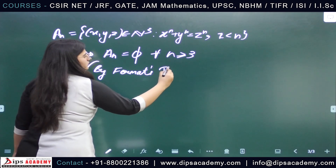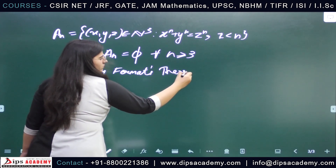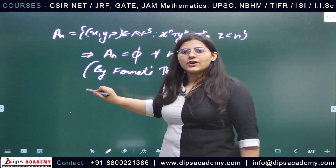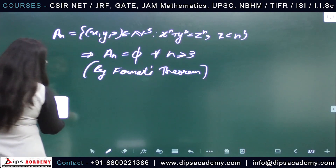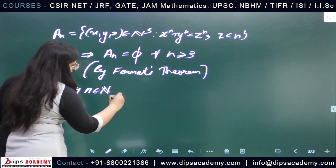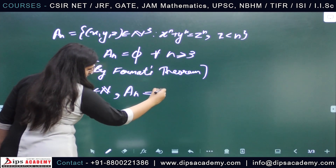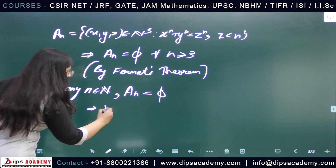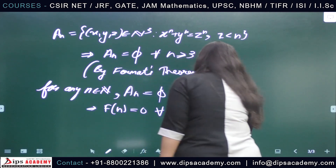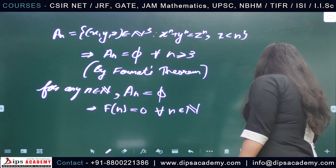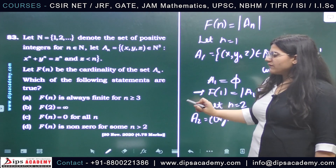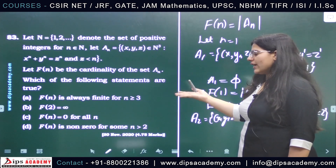So we have proved the result for n = 1 and n = 2, and by Fermat's theorem for n ≥ 3. Therefore, for any natural number n, A_n is the empty set, which implies f(n) = 0 for every n in N. We have shown that f(n) = 0 for every natural number n. Now let us think about the options. The first option states that f(n) is always finite for n ≥ 3.